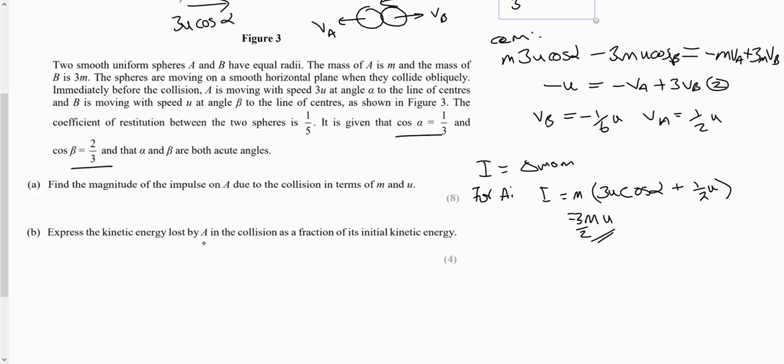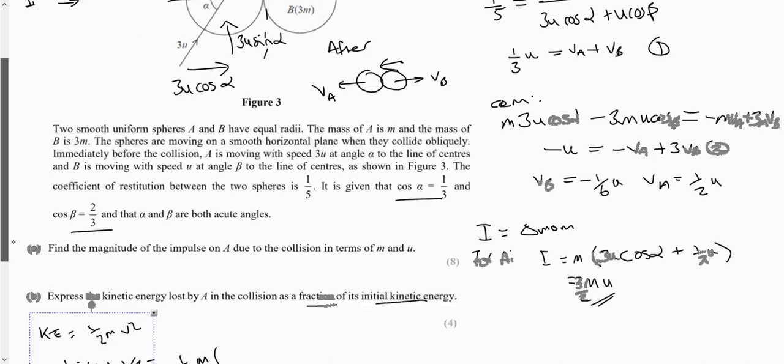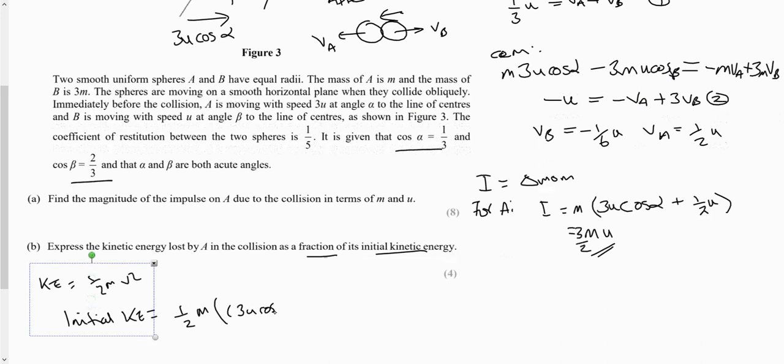Right, then in part B, we want to know the kinetic energy lost by A, and you've got to read the whole question. They want it as a fraction of its initial kinetic energy. Right, so remembering kinetic energy is a half mv squared. So our initial kinetic energy is a half, our mass is m. Now, we need to use Pythagoras to get the whole magnitude of our velocity. So that's going to be 3u cos alpha squared plus 3u sin alpha squared. And we can work all that out and simplify it, and you get 9 over 2mu squared.